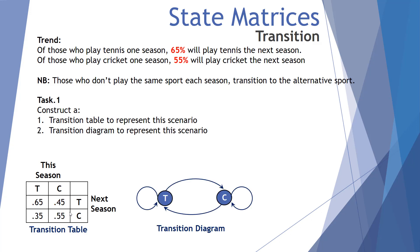Task two: complete the transition diagram to represent this scenario. Tennis to tennis from one season to the next was 0.65 or 65%. Cricket transitioning back into cricket was 55% or 0.55. The transition from tennis to cricket was 35% or 0.35, and from cricket to tennis next season is 0.45 or 45%.